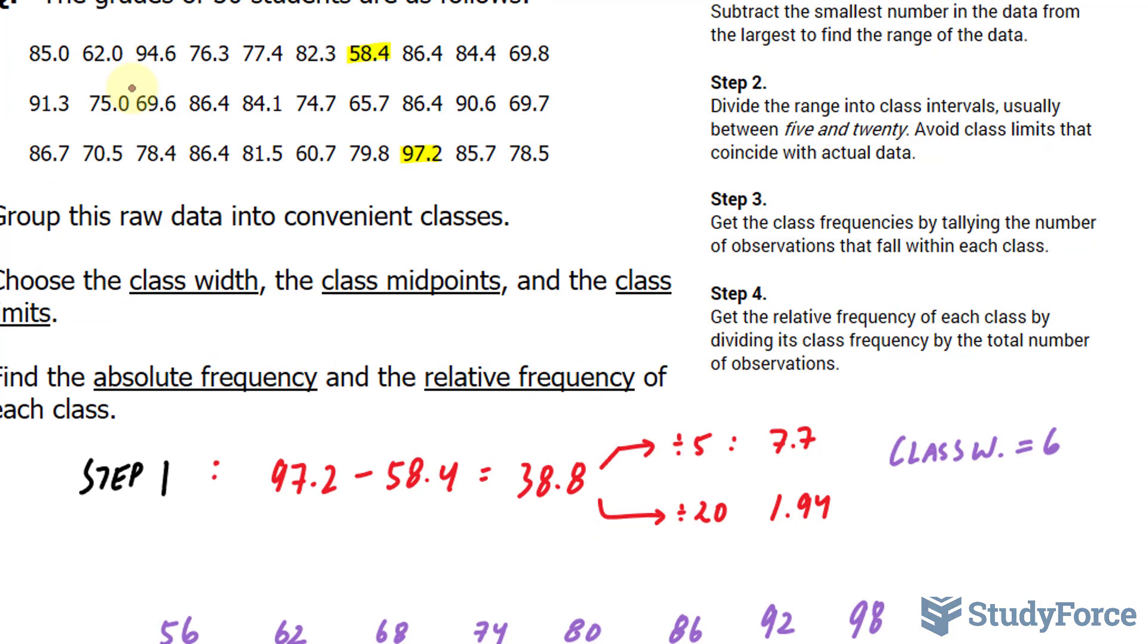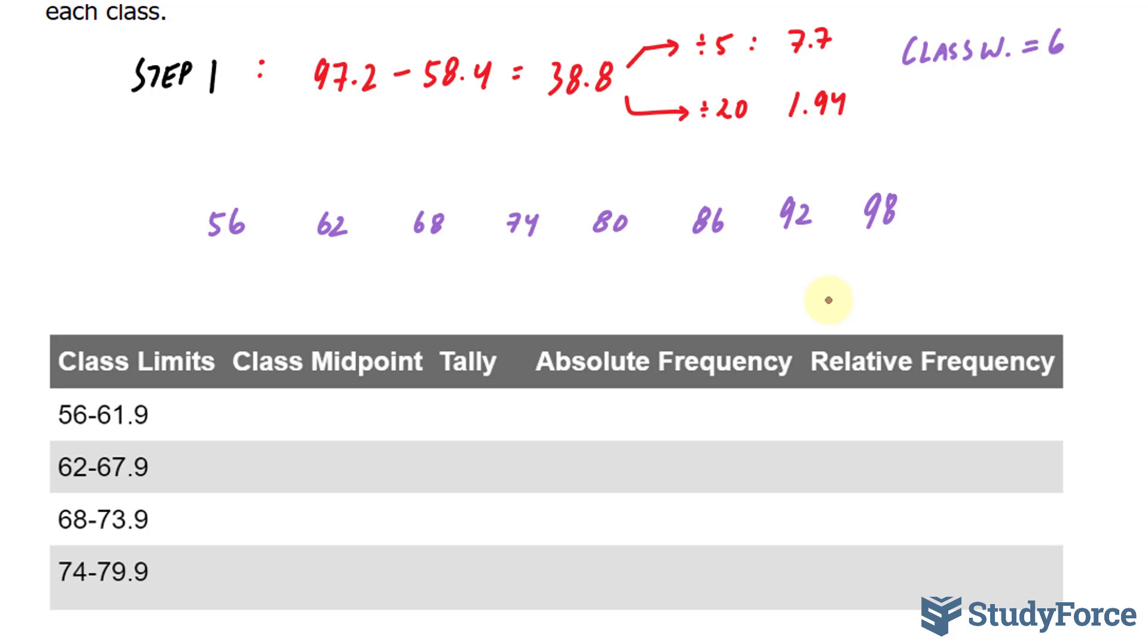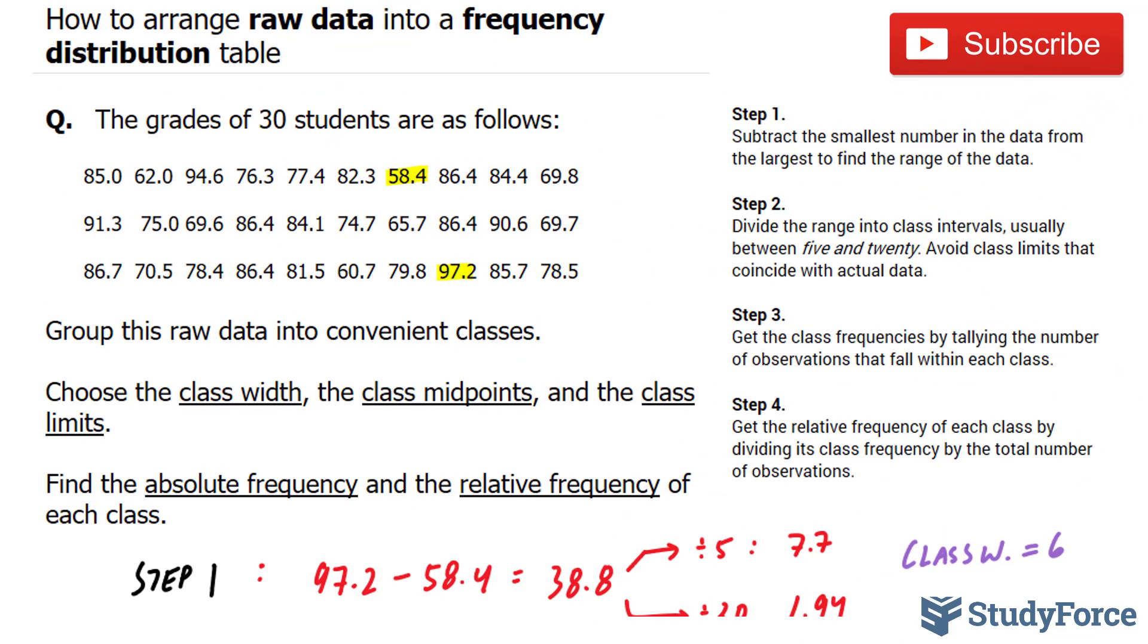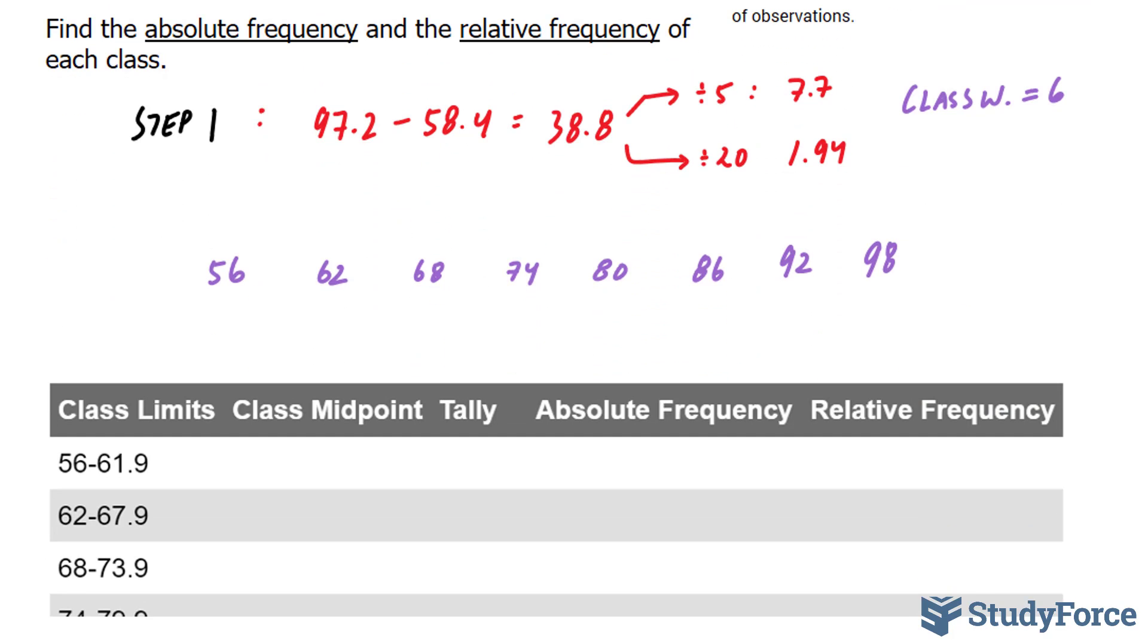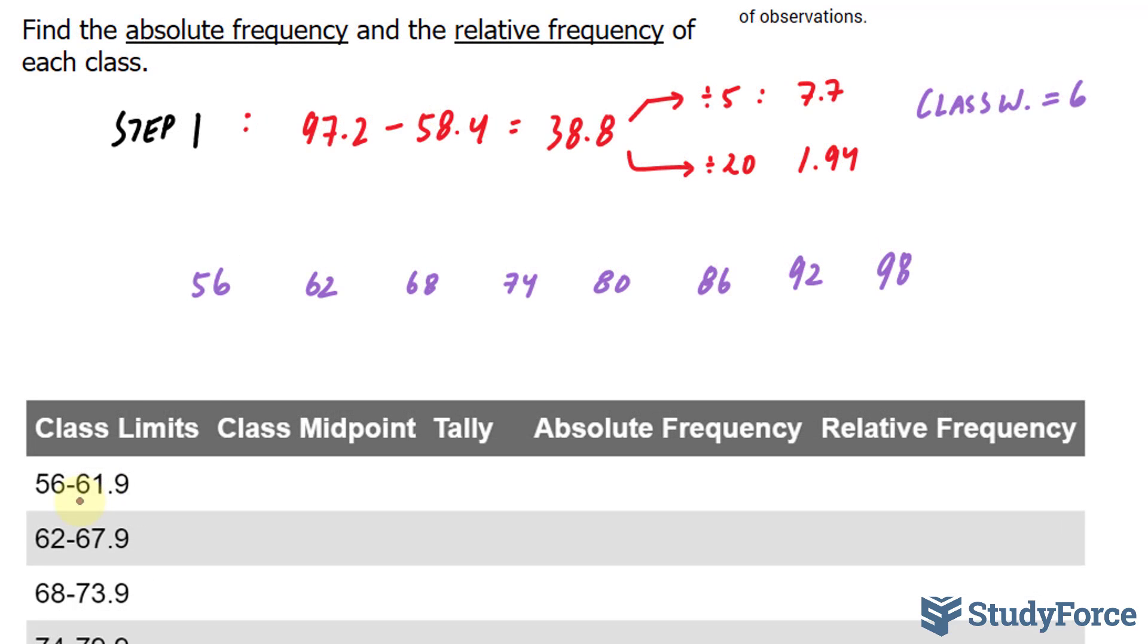I've gone ahead and created a table. And you'll notice that instead of using 56 to 62, which I had originally, I'm using 56 to 61.9. And the reason for that is because I have an observation that falls directly at the limit of one of my classes. For example, this number 62 would be ambiguous because we don't know whether it falls within this class or the next. So it's always nice to write it out like this, where you have the lower limit to the upper limit, but not including the endpoint. So if we were to write this in interval notation, it would be 56 with a square bracket to 62 with a round bracket, which means anything less than 62 belongs here. And similarly, from here to here we would write down 62 to 68 with the round bracket.